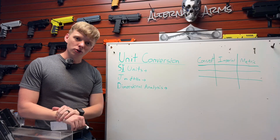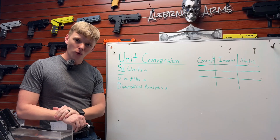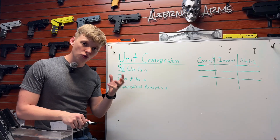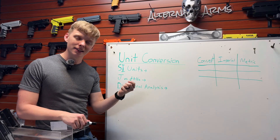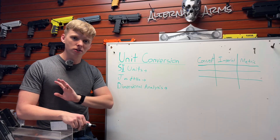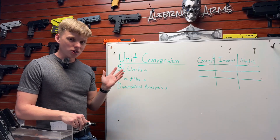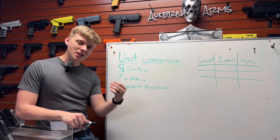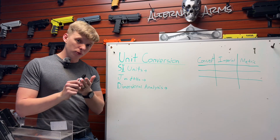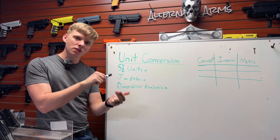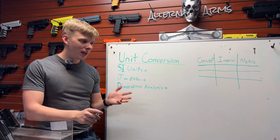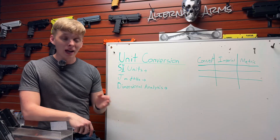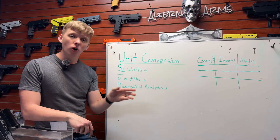The reason why unit conversions is a very important topic to understand is because units are what we use to describe certain physics concepts in Less Than Lethal, ballistics, projectile motion, all of it. Whenever you hear a launcher's output in terms of its energy, you're going to hear one of three things: joules, newton-meters, or foot-pounds. Today I'd like to explain the difference between the three, how to convert between them, and why we choose one over the other.